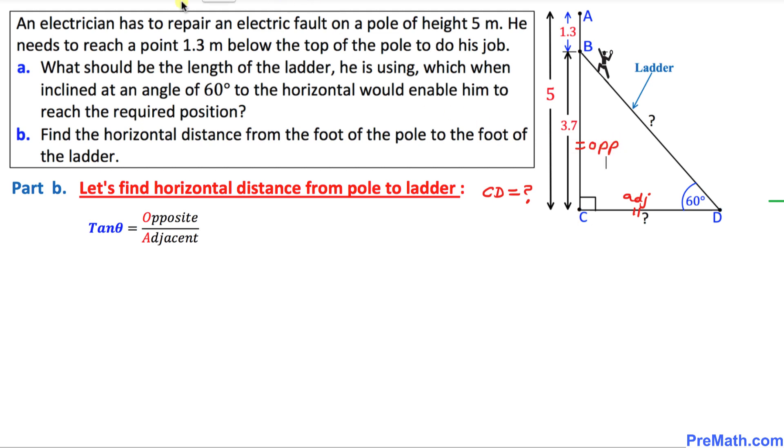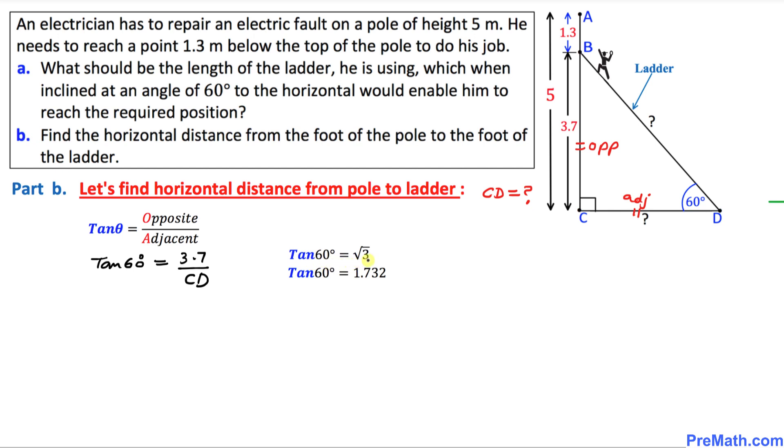This is going to become tangent of 60 degrees equal to opposite side. We know it's 3.7 divided by adjacent, which is CD. And we know that the tangent of 60 degrees is square root of 3, or in terms of decimal, it's going to be 1.732. I'm going to replace this tangent of 60 degrees by 1.732 equal to 3.7 over CD.